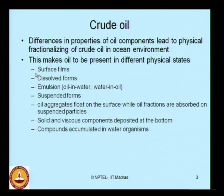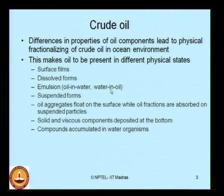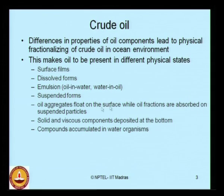Crude oil can appear as thin surface films formed on the top layer of seawater. It can also be found in dissolved form, or in emulsion form — either oil in water or water in oil. Sometimes crude oil components can be seen in suspended forms as well. Oil aggregates float on the surface while oil fractions are observed on suspended particles, improving their specific gravity and allowing them to settle on the sea bed. Solid and viscous components are usually deposited at the bottom.